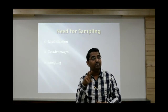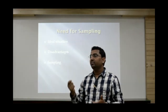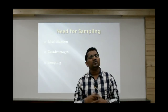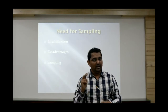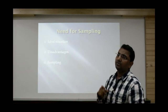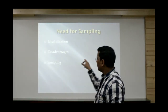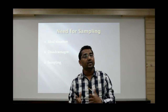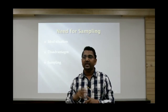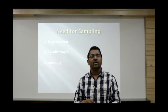When you observe the entire population, that method is called census — for example, the Census of India, carried out every 10 years, where each individual is observed and recorded. But this is not possible for all studies, so we go for sampling. A sample is a small part of the population which we actually study, and the technique by which we draw such a sample is called sampling.